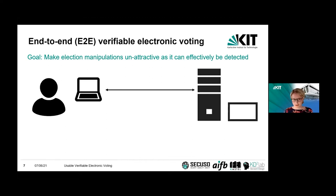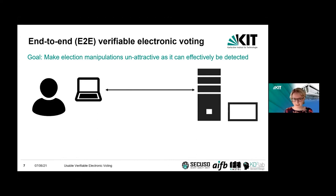If you don't want to trust, you actually need to use a so-called end-to-end verifiable electronic voting system. Of course, even if you use an end-to-end verifiable system, hackers could try to change votes or the election result, but it's not attractive anymore — because using end-to-end verifiable electronic voting means you can effectively detect manipulations and react. So you want to be able to detect manipulations and then decide, in particular, to rerun the election or go back to paper-based elections.